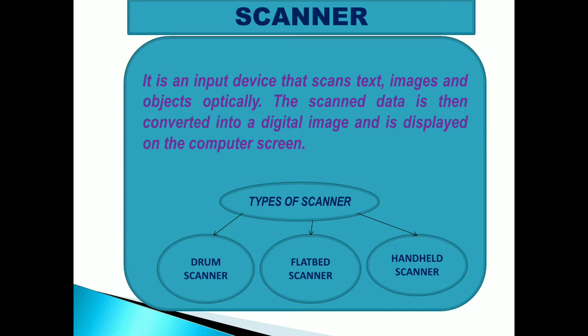The next external hardware is the Scanner. It is an input device that scans text, images and objects optically. The scanned data is then converted into a digital image and displayed on the computer screen. There are different types of scanner: drum scanner, flatbed scanner, and handheld scanner.